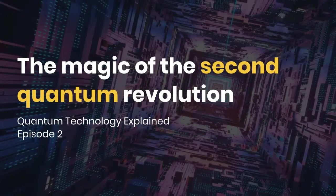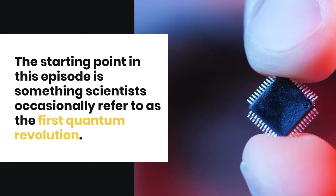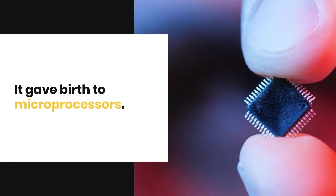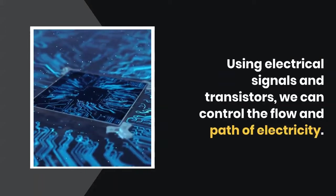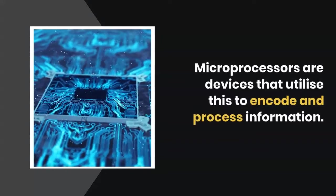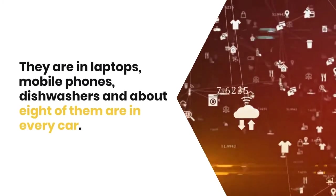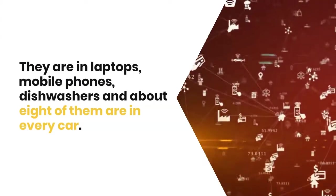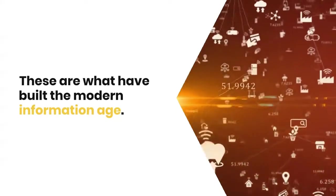The magic of the second quantum revolution. The starting point in this episode is something scientists occasionally refer to as the first quantum revolution. It gave birth to microprocessors. Using electrical signals and transistors, we can control the flow and path of electricity. Microprocessors are devices that utilize this to encode and process information. They're in laptops, mobile phones, dishwashers, and about eight of them are in every car. These are what have built the modern information age.